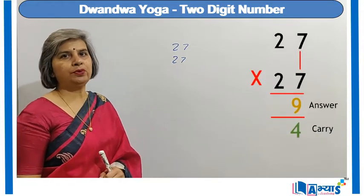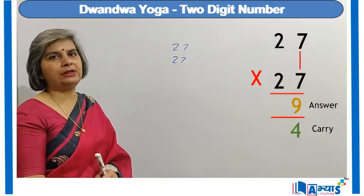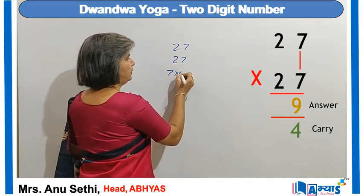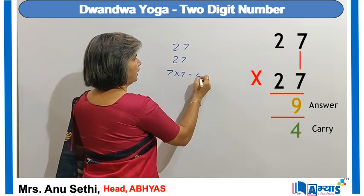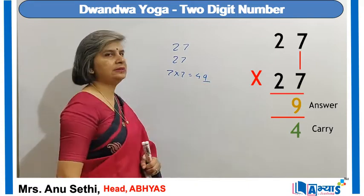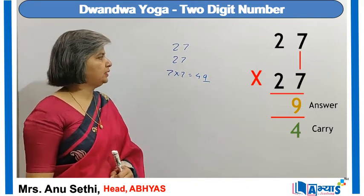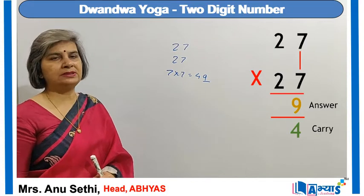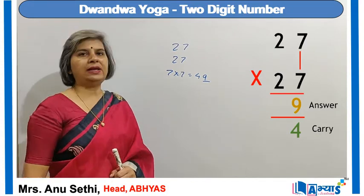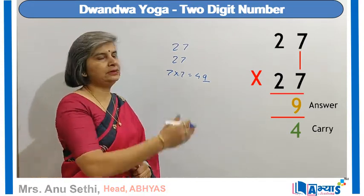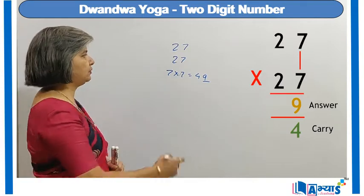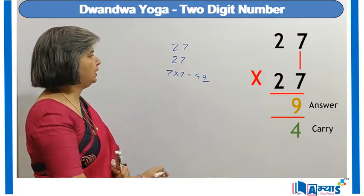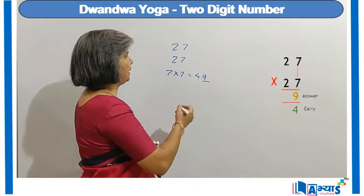The first step is straight multiplication — I multiply 7 with 7, that is the square of 7, and I get 49. So 7 into 7 is 49. Out of this, 9 is placed in the answer and 4 is considered as the carry. So 9 is in the answer and 4 is in the carry. This completes the first step.